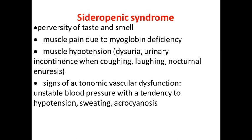Sideropenic symptoms also appear as perversity of taste and smell. Patients' taste changes and they want to eat unusual things like earth or chalk. Their smell and taste also change — they may like to smell acetone, varnish, or solvents, for example. Muscle pain may occur due to myoglobin deficiency, because myoglobin contains iron.